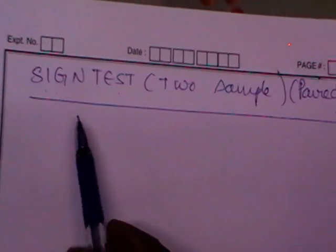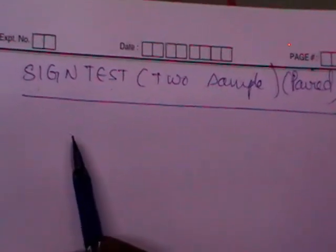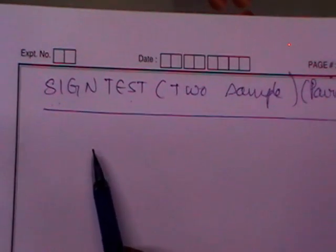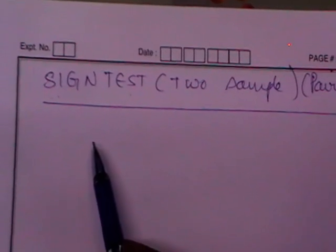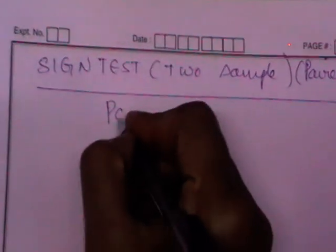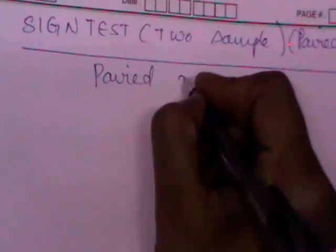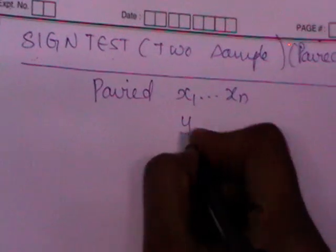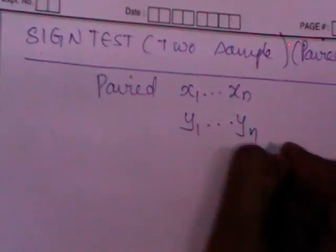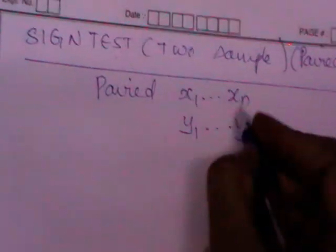We have discussed sign test for one sample. The next test is sign test for two samples. Two samples means either they may be paired or they may be independent. Paired samples means whenever we have two samples with equal sizes, we call those as paired samples.